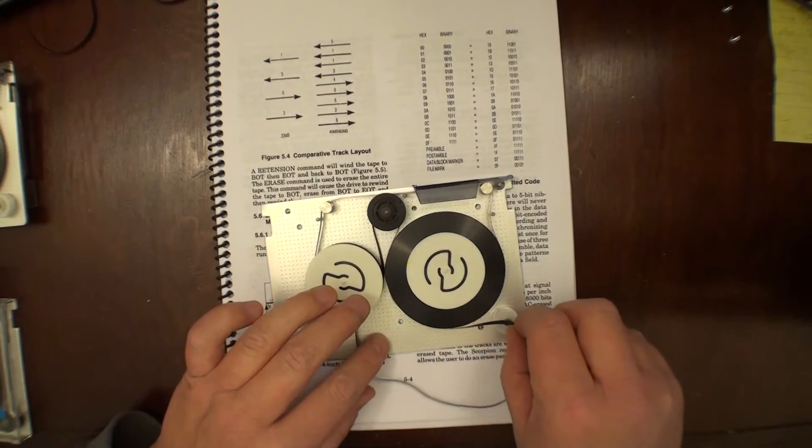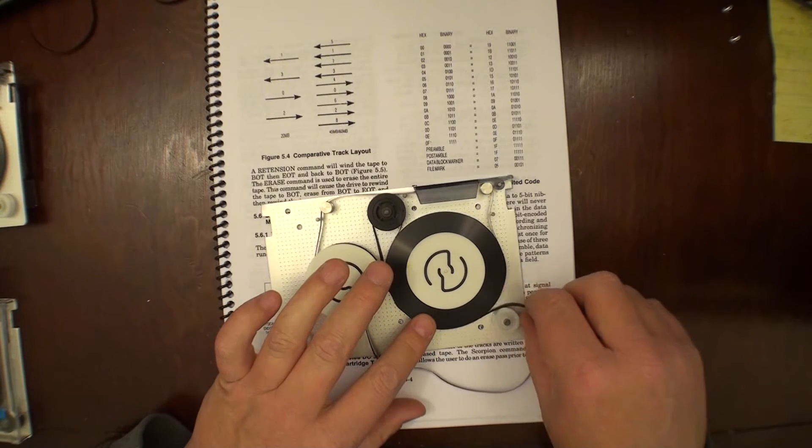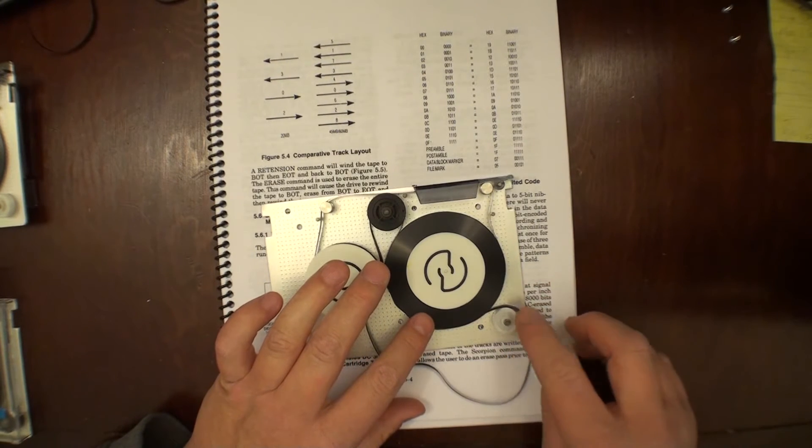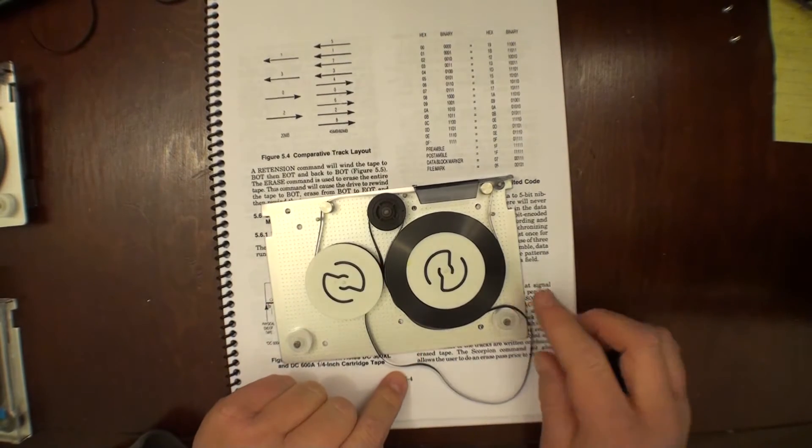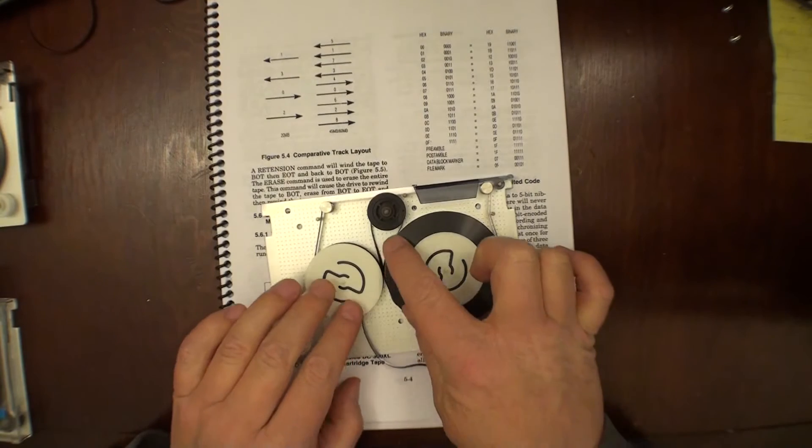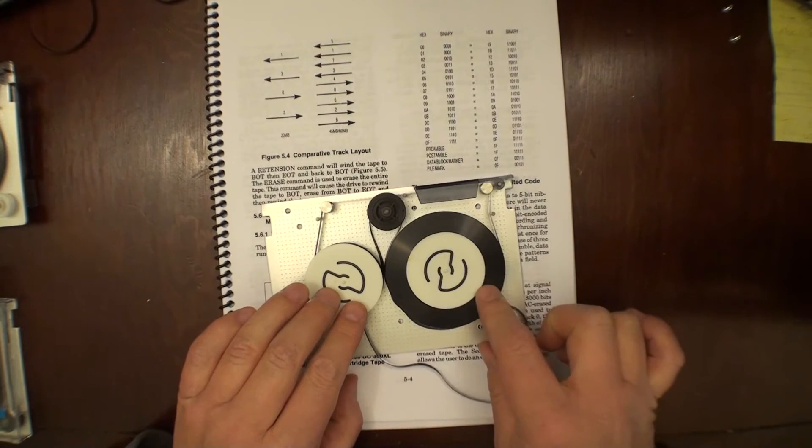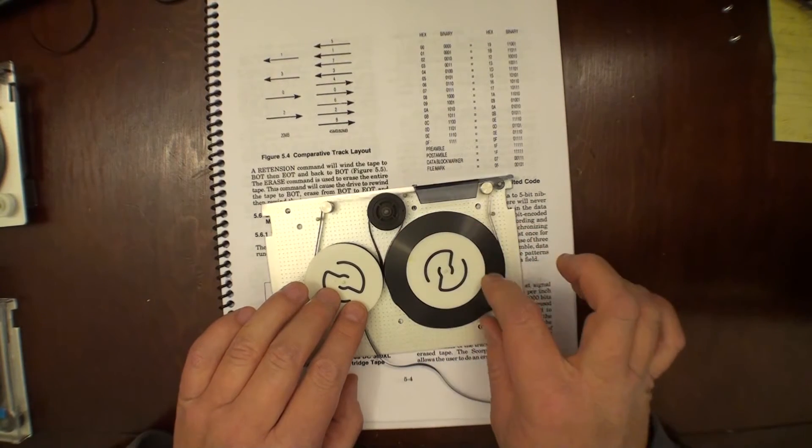And then the first one we want to slip it around. The first wheel, idler wheel I think is what you would call it. We want to slip it around this one. The one underneath the large, I guess in this case it's the supply wheel.